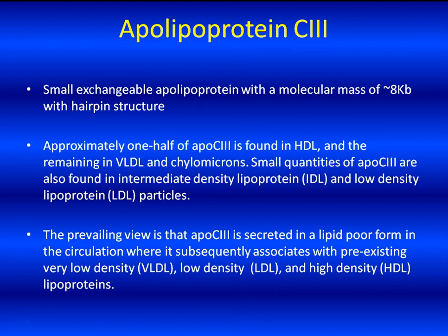Apolipoprotein C3 is a 79-amino acid glycoprotein synthesized by the liver and intestine. It is currently believed that ApoC3 is secreted in a lipid-poor form in the circulation where it subsequently associates with pre-existing very low-density, low-density, and high-density lipoproteins. Approximately one-half of ApoC3 is found in HDL and the remainder in VLDL and chylomicrons. Small quantities of ApoC3 are also found in intermediate-density and LDL-density particles.